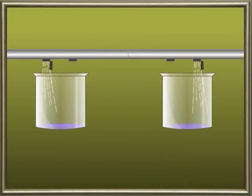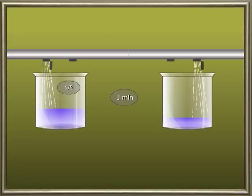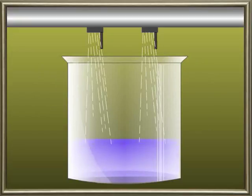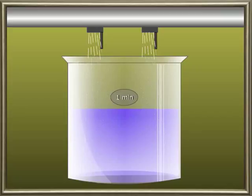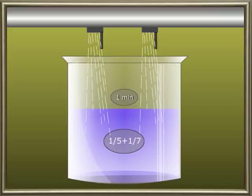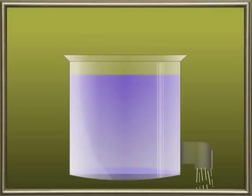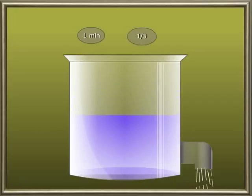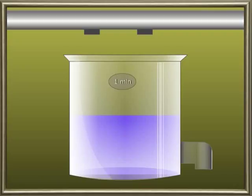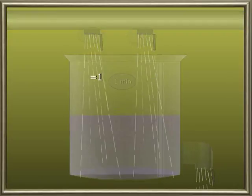Solution: the portions of the tub filled by the two taps in one minute are one-fifth and one-seventh respectively. So the portion of the tub filled by the taps together in one minute is 1/5 + 1/7. The portion of tub emptied by the pipe in one minute is 1/3.